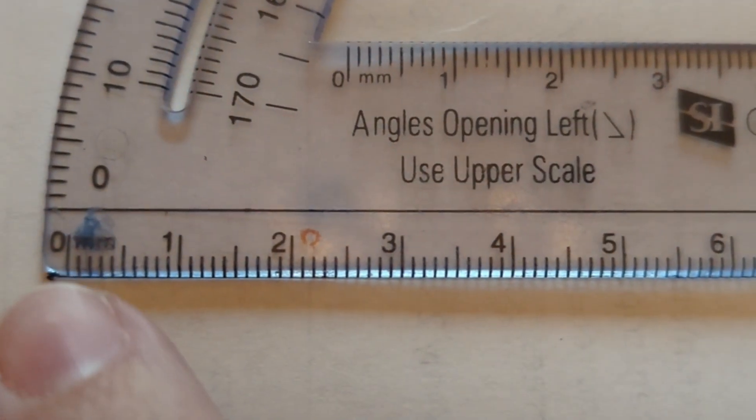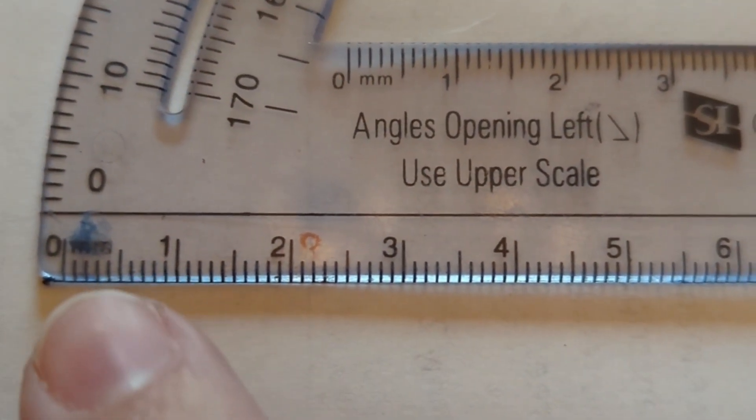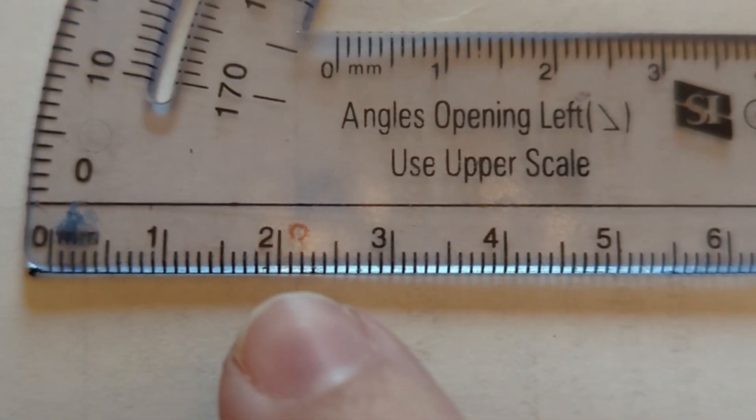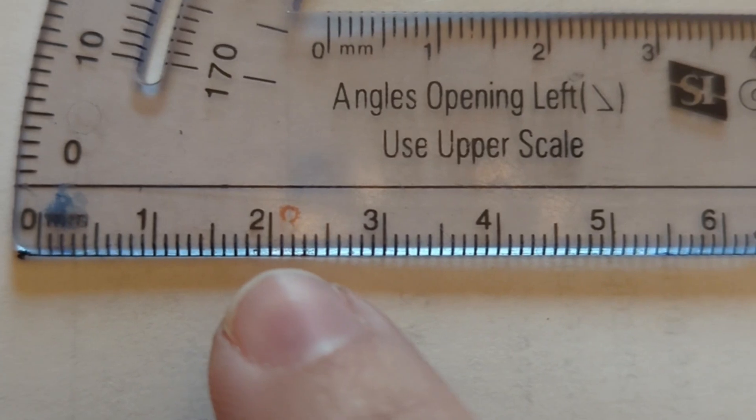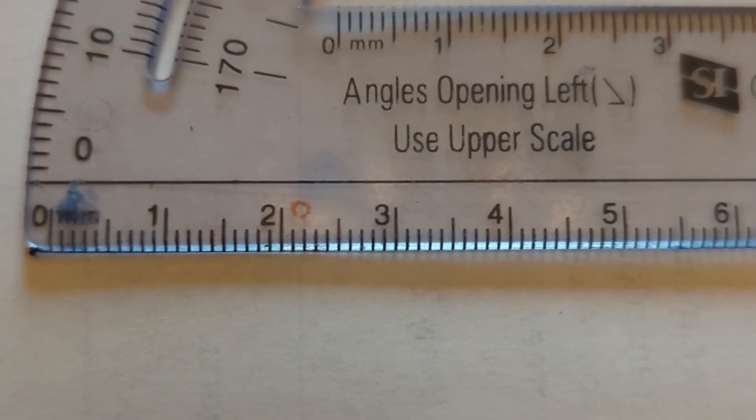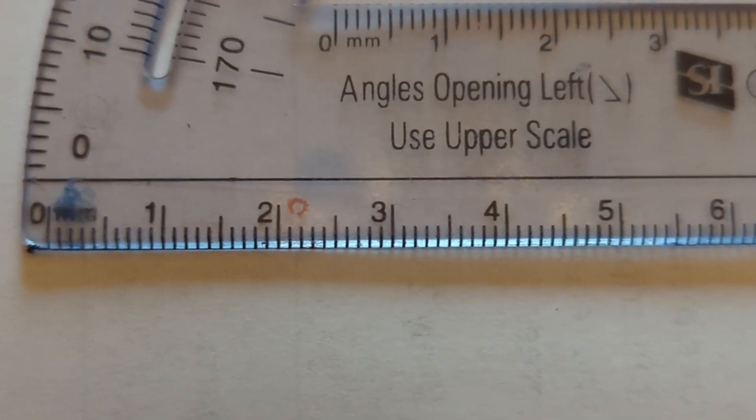Remember with millimeters we're not measuring by the big full numbers. Those are centimeters. Millimeters are each tick. So with one centimeter we have 10 millimeters. Two centimeters is 20 and so on.